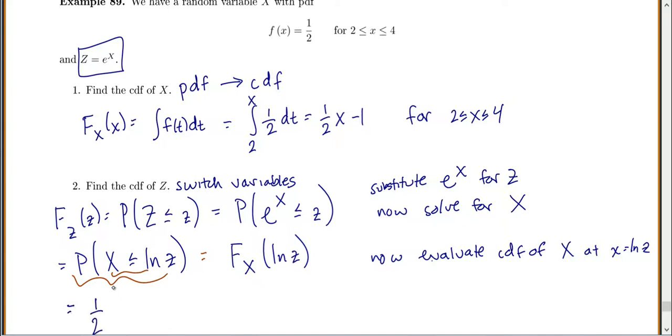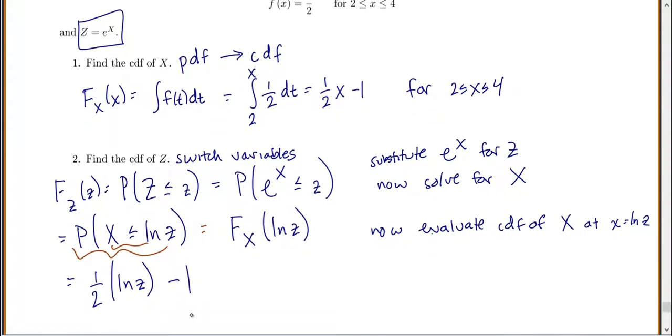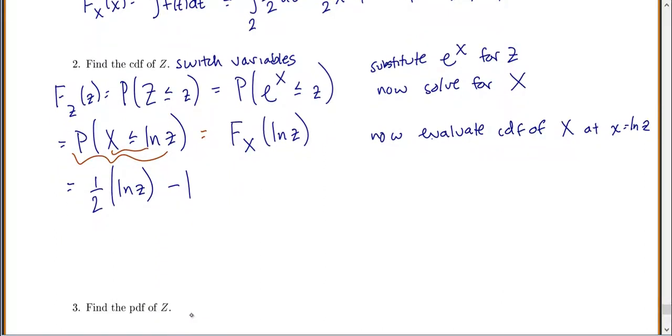So 1/2 x minus 1. So this is equal to 1/2, and instead of an x, we put natural log of z, minus 1. So that's our new CDF of z.